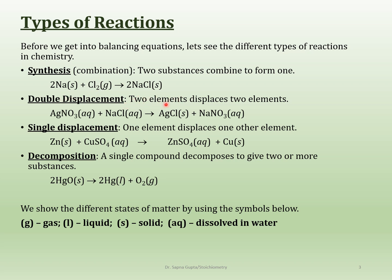Double displacement is when you have two elements displacing other two elements. Here you have silver nitrate and sodium chloride on the reactant side, and on the product side you have silver chloride. Silver displaced sodium to be with chlorine, and sodium combined with nitrate to give sodium nitrate — that's a double displacement reaction. Then there is a single displacement reaction in which only one chemical is displacing the other. Zinc here is displacing copper to give zinc sulfate, and copper is by itself.